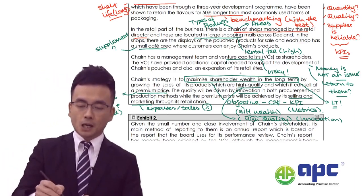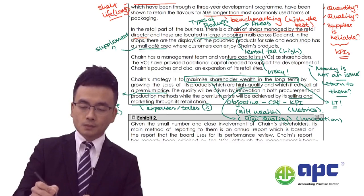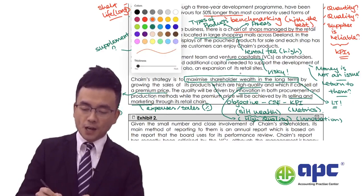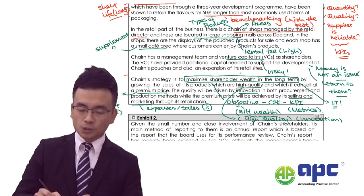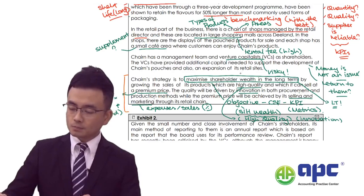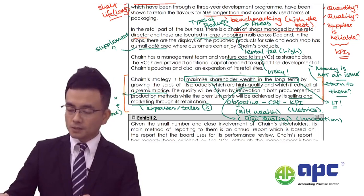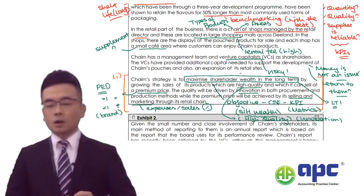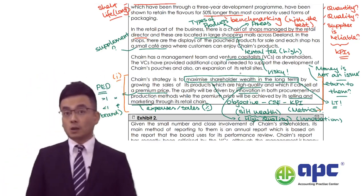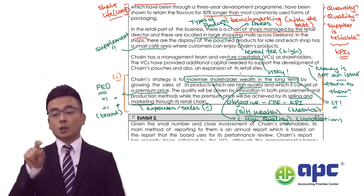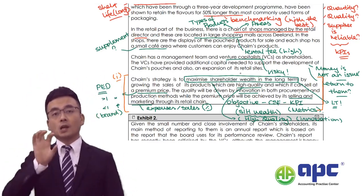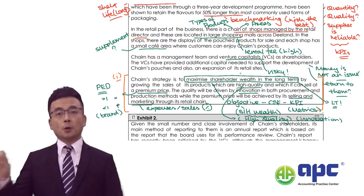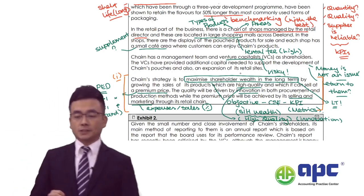We need to see a lot of KPIs related to each of these objectives, and I would say this is very important because it relates to part one of our requirement. We need to combine this with the performance report given by the examiner.